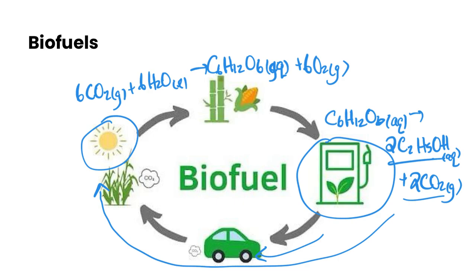Carbon dioxide is produced in this cycle; however, it's offset by the absorption of a greater amount of CO2 in the process of photosynthesis. We produce 2 moles of CO2 from creating our fuel, but then use 6 moles of CO2 to fix and create the organic source for our biofuel. So it's actually more advantageous to use this and a little bit better for the environment.